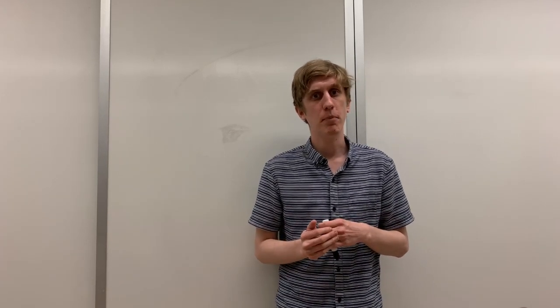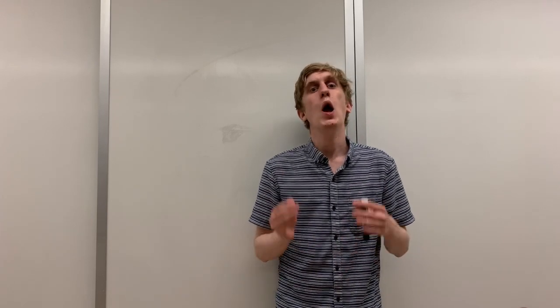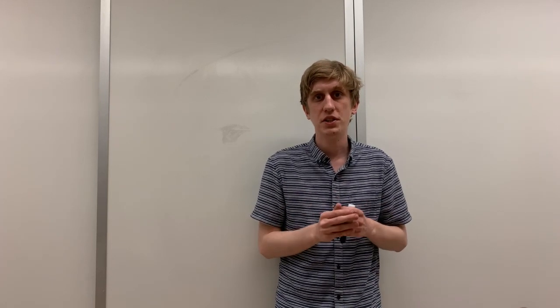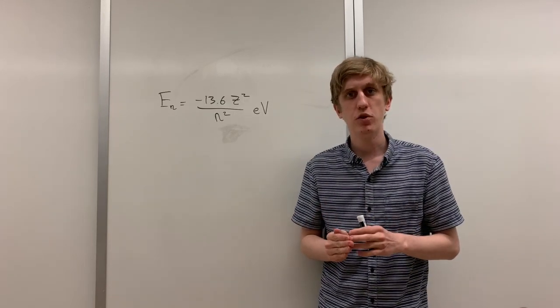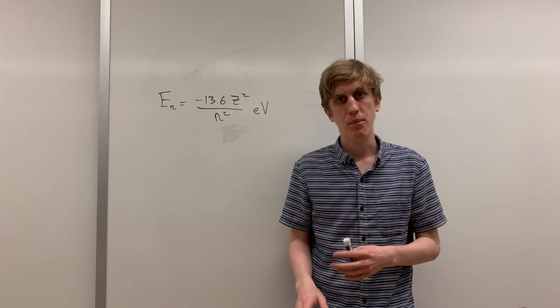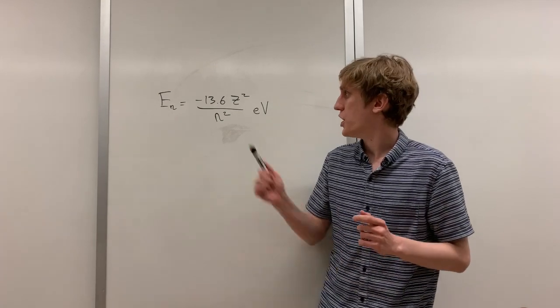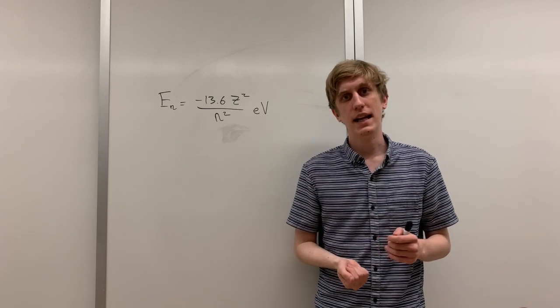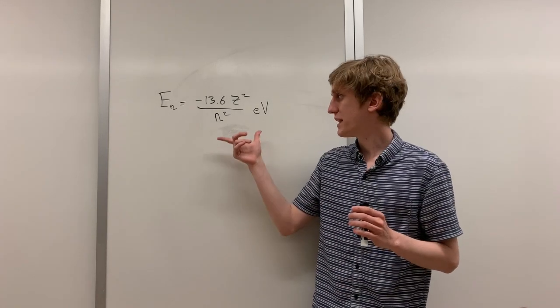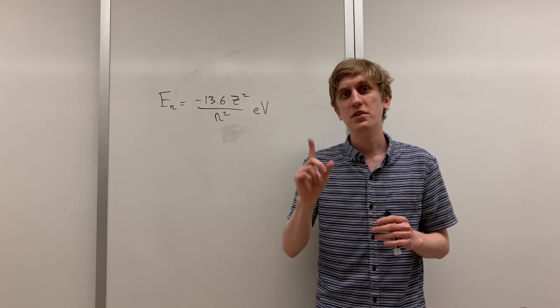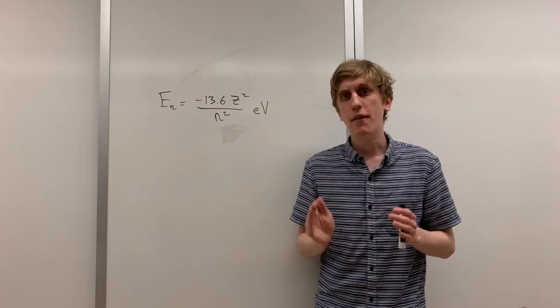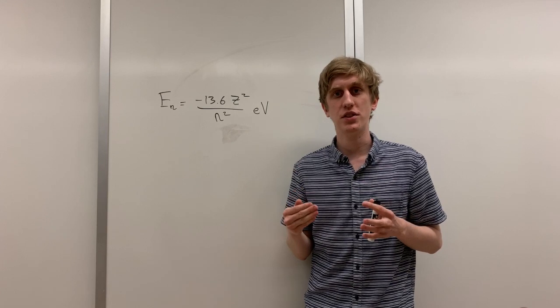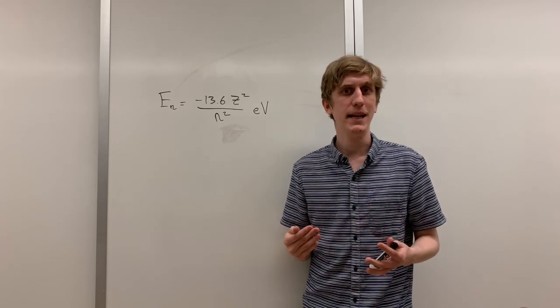Just as with the particle in a box, the particle in the hydrogen atom can only have very specific energies. It's not allowed to have just any energy that it wants. The energies that the electron is allowed to have is given by this equation. There are two parameters in this equation, Z and N. Z represents the number of protons in the atom. It's only possible to get an equation that can be written down like this when there's a single electron in the atom. Of course, large atoms have much more than one electron. But we can still always imagine a scenario where we have a single electron and many protons.